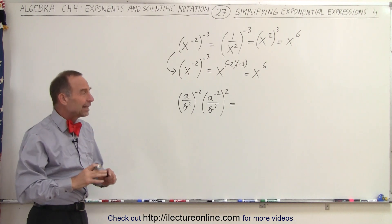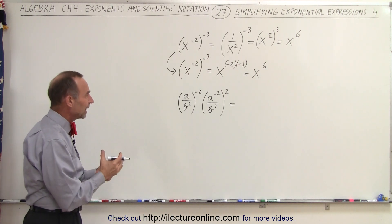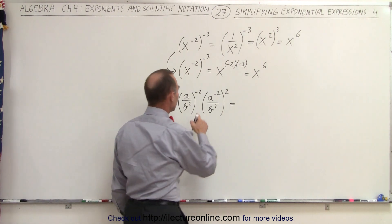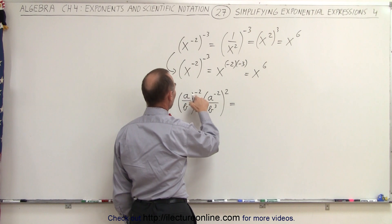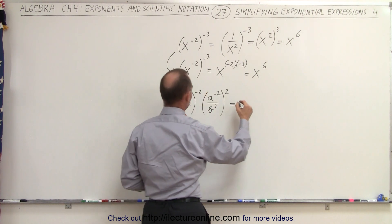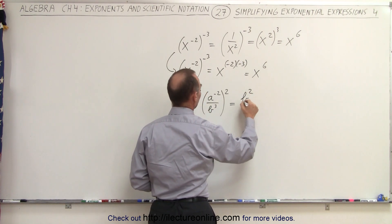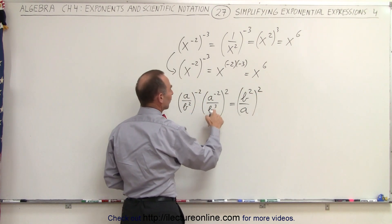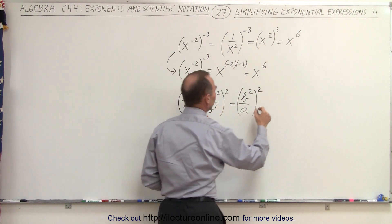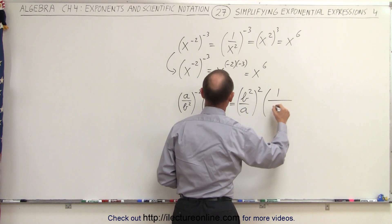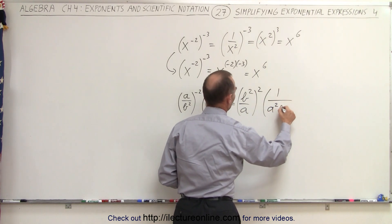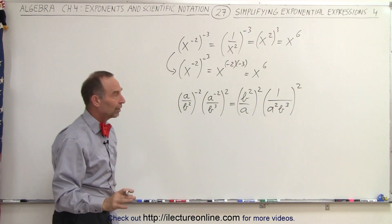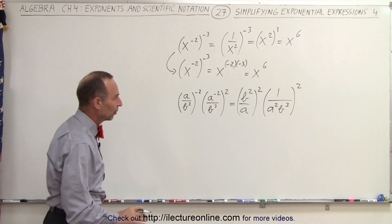Sometimes it's just better to clean things up first and get rid of the negative exponents, especially when we have something this complicated. What we can do here is first change this into a positive exponent by flipping this first fraction around, so we end up with b squared over a to the positive 2 power. Over here we can bring the a to the denominator, so this equals 1 over a squared b cubed, raised to the second power. Now we've gotten rid of all the negative exponents.